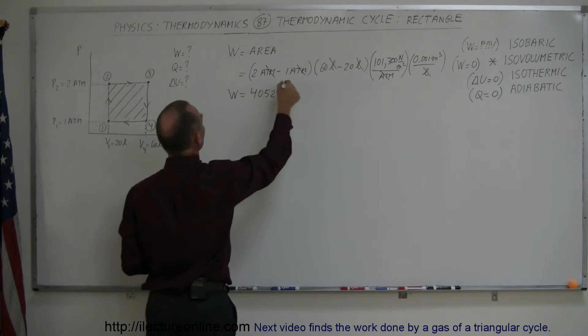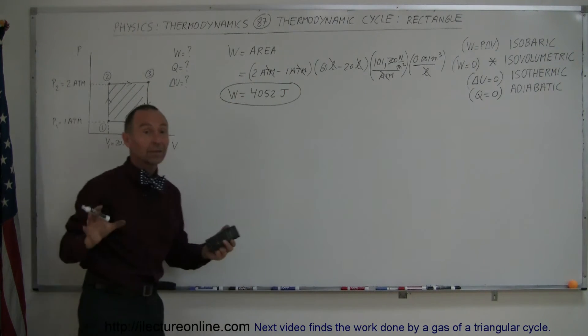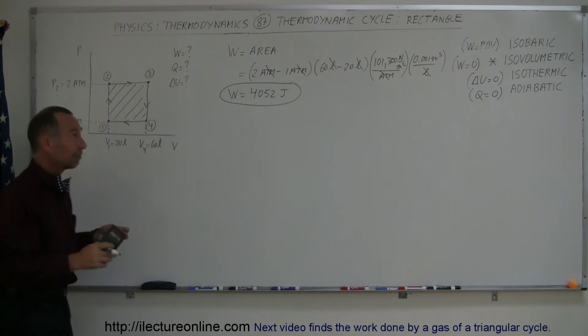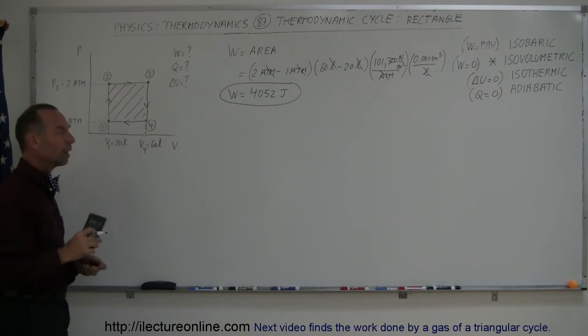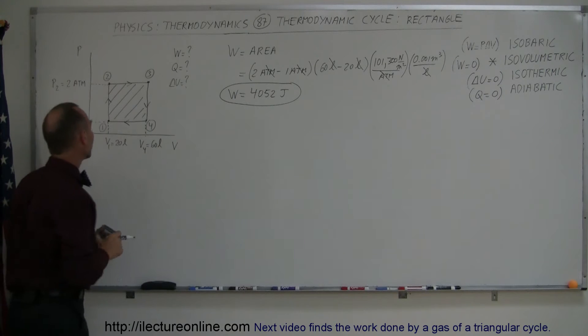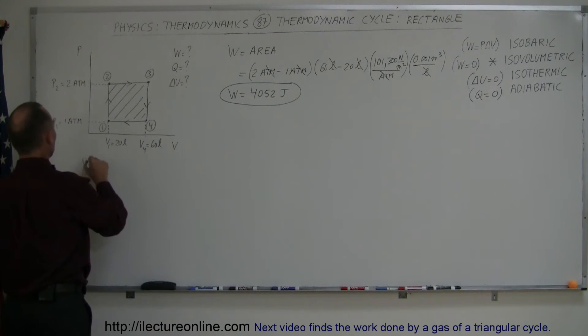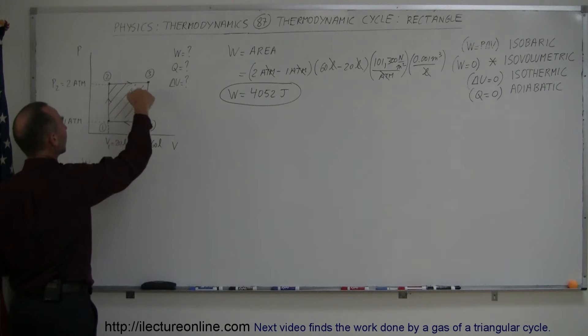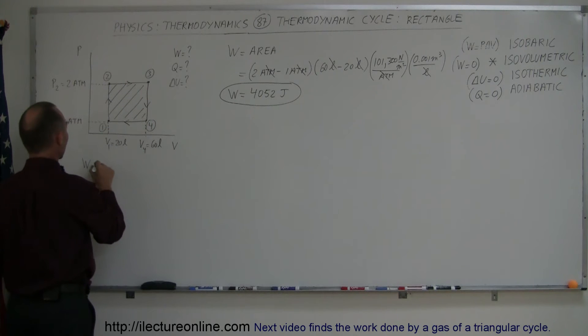So it's a fairly straightforward way to find the work done. And nothing wrong with that method. If you can do that every time, just go ahead and do that. But there's another way we can do that. We can also say that the work done, the total work done in a cycle, is simply the sum of the work done of the four processes that make up the cycle.